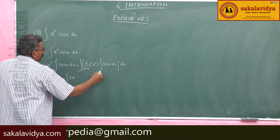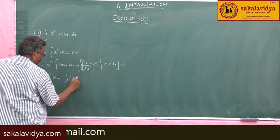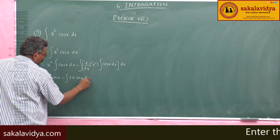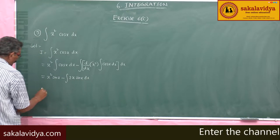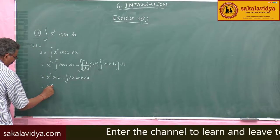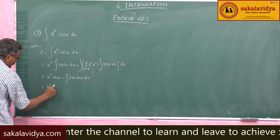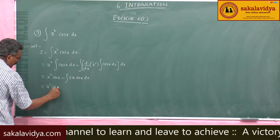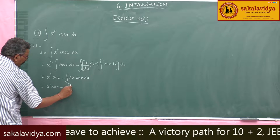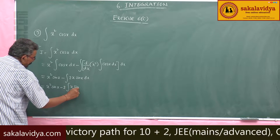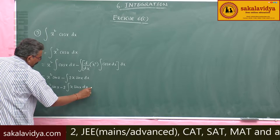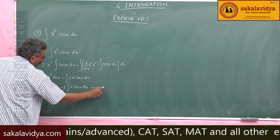The integral of cos(x) dx is sin(x). So this gives us x² sin(x) minus 2 times the integral of x sin(x) dx. We call this equation 1.